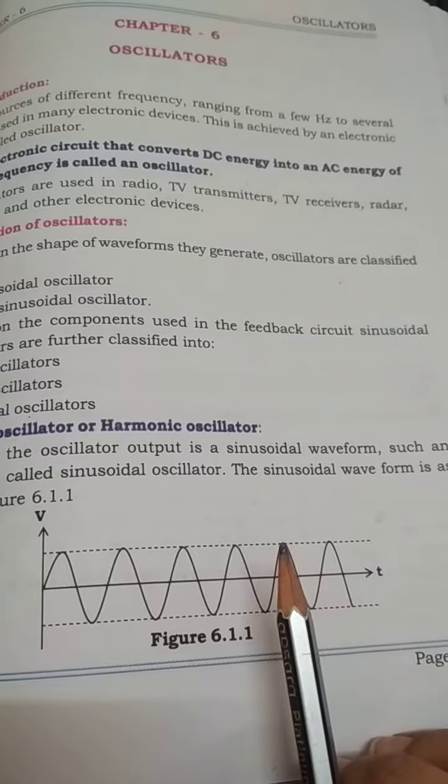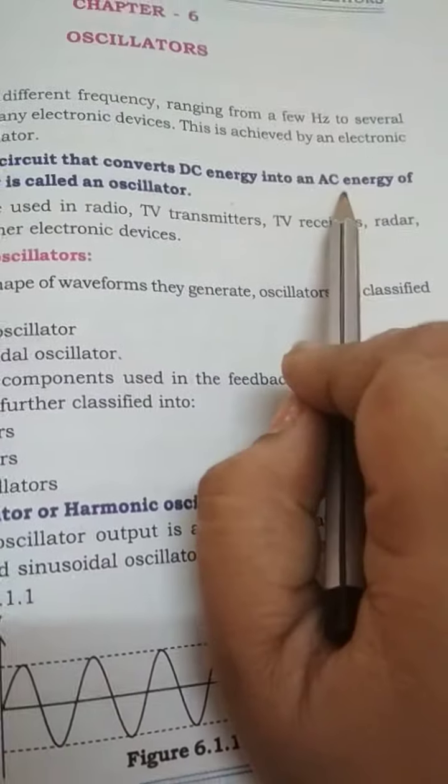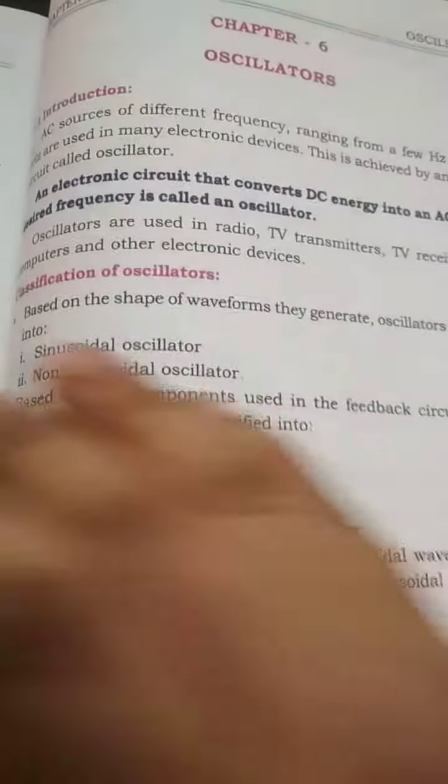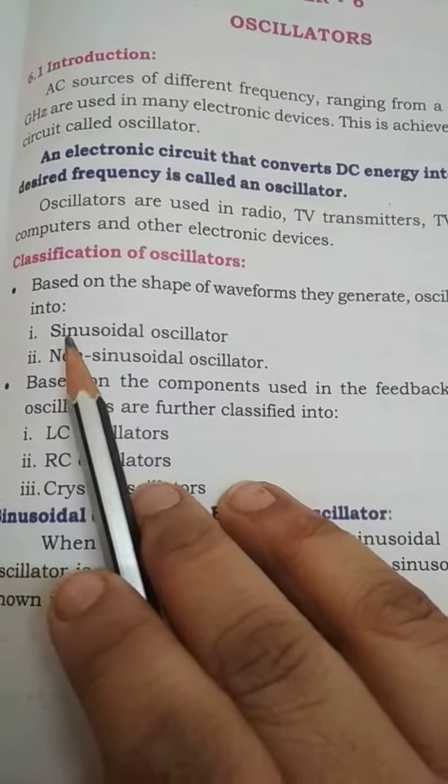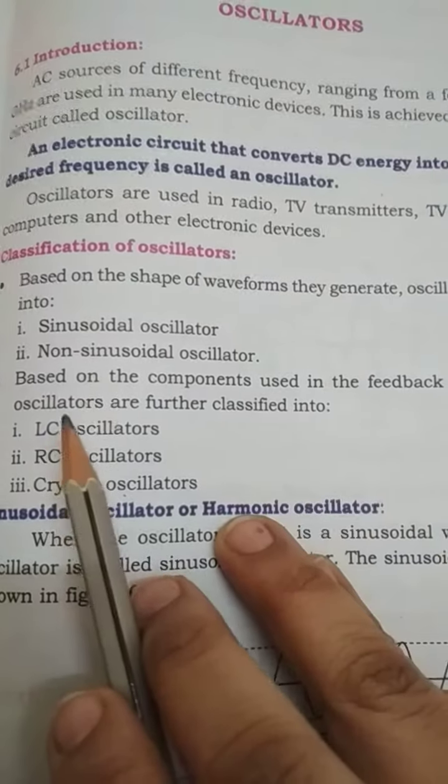Another definition is they convert DC energy into AC energy. They are also called as oscillator and depending on whether sinusoidal oscillations are created, they are classified as sinusoidal oscillator and non-sinusoidal oscillator.